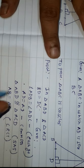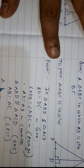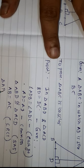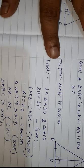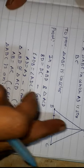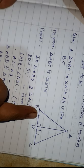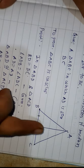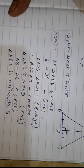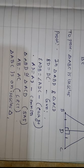So we can say triangle ABC is an isosceles triangle. See carefully: 90 degrees, common side, and this side — side-angle-side.